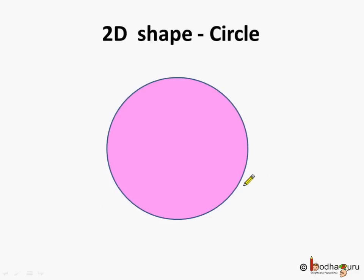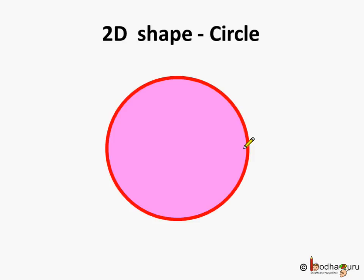What about a circle? Does it have a side or a corner? No, a circle does not have any corner or any side. We can say a circle has zero sides and zero corners.